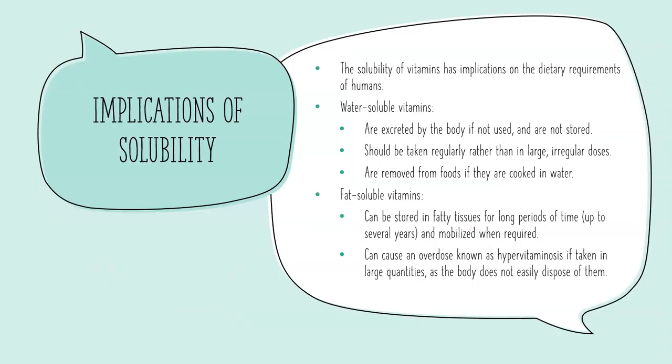In terms of solubility and its implications for function: water-soluble vitamins are excreted by the body if not used, so they're not stored for long periods, meaning we need to take them in regularly rather than in large irregular amounts. A constant supply of fresh fruit and vegetables is needed for sufficient vitamin C, and cooking — especially boiling or steaming — tends to reduce vitamin C content. Fat-soluble vitamins, on the other hand, can be stored in fatty tissues for long periods and mobilized when required. However, consuming far too many fat-soluble vitamins can lead to hypervitaminosis — an overdose that the body doesn't easily dispose of, causing toxic effects and disease.